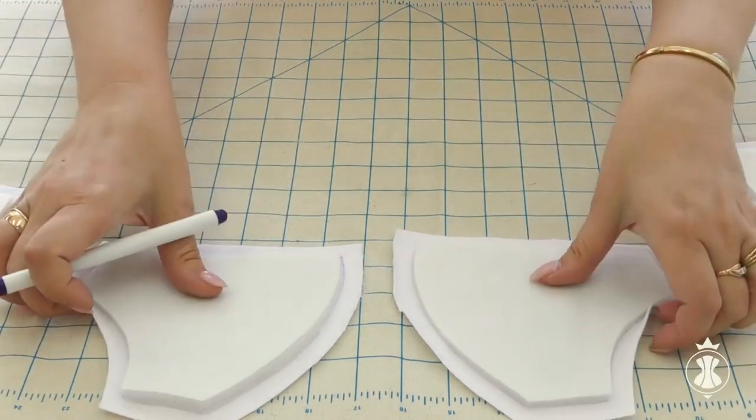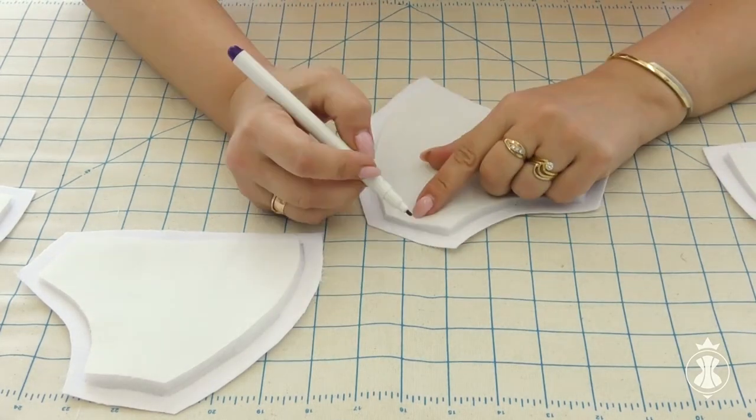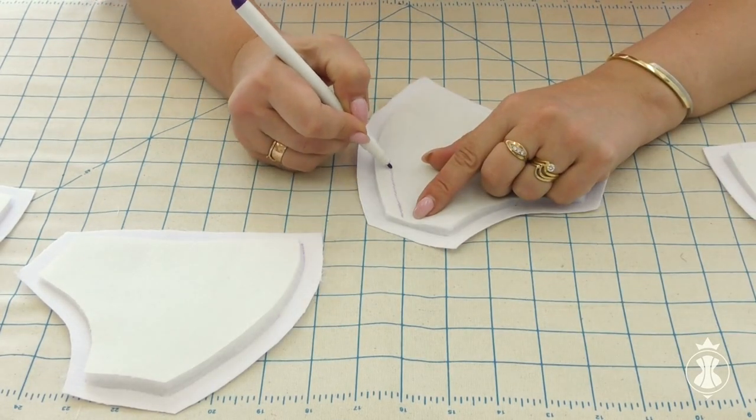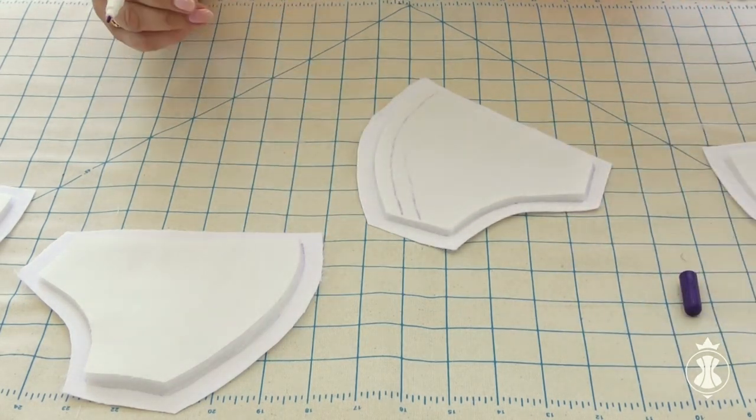We need to make markings before strengthening the cups. I will draw lines in 1 cm from each other on every cup piece. I draw the lines with a disappearing ink pen.